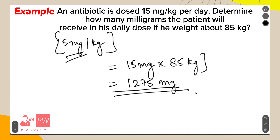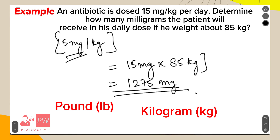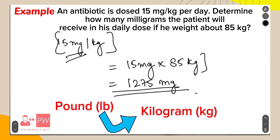As with all calculations, note the units. If a patient's weight is given in pounds but the dose is prescribed in mg per kg, the weight must first be converted into kilograms before proceeding with the calculation.